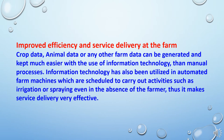Another role of information technology is improved efficiency and service delivery at the farm. Crop data, animal data, or any other farm data can be generated and kept much easier with the use of information technology than manual processes. Information technology has also been utilized in automated farm machines, which are scheduled to carry out activities such as irrigation or spraying even in the absence of the farmers, thus making service delivery very effective.